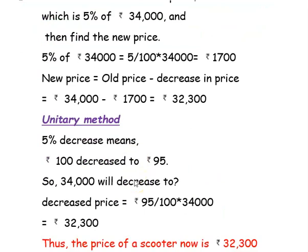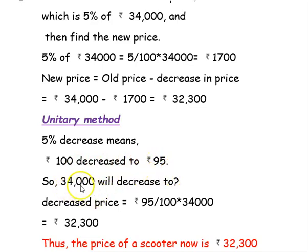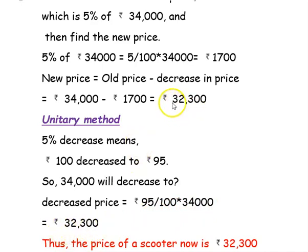The same question using the unitary method: a 5% decrease means ₹100 is decreased to ₹95. So if ₹100 decreases to ₹95, then ₹34,000 decreases to: 95 × 34,000 ÷ 100 = ₹32,300. The answer in both cases is ₹32,300. Thus, the price of the scooter now is ₹32,300.